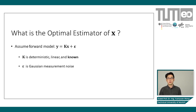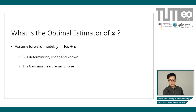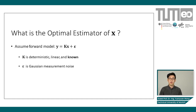Let's consider a very simple scenario where our model is purely deterministic and linear. Our measurement Y equals the model matrix K multiplied by our signal X, plus some measurement noise, which we can assume is Gaussian. This is a homework problem for you — you can pause the video for a few minutes and work out what the optimal estimator for X is in this scenario.